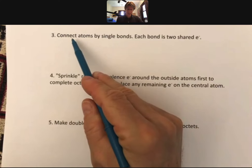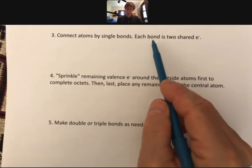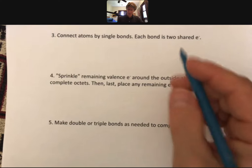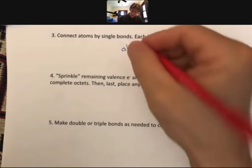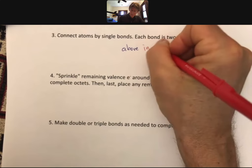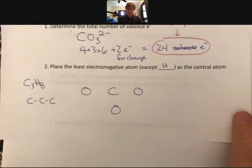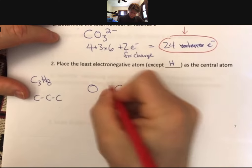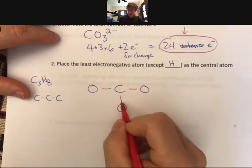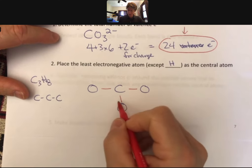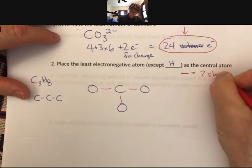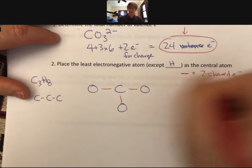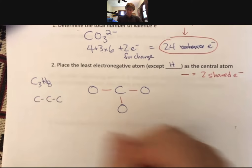So anyway, but most of what we're doing is we're putting the least electronegative atom in the center. Now let's go on to step three. Step three says connect atoms by single bonds. Each bond is two shared electrons. So I'm going to do that above. And in red. So go back to this page. And draw three dashes. Each of those three dashes. So dash equals two shared electrons.